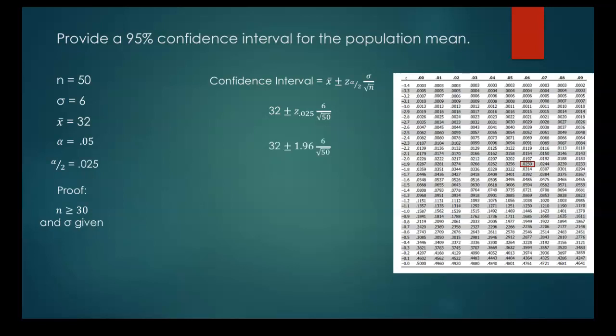So we plug that into our confidence interval formula. And then we take that 1.96, multiply it by the 6 over the square root of 50. We get 1.66 as our margin of error.